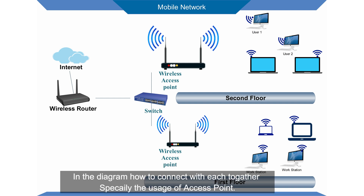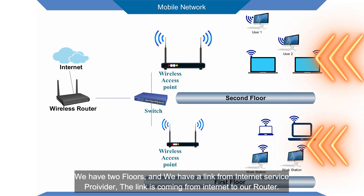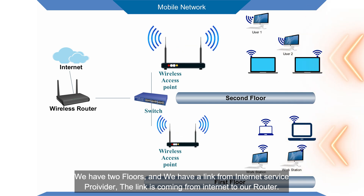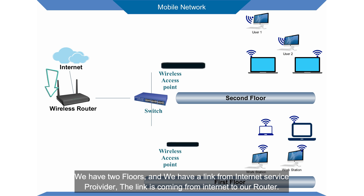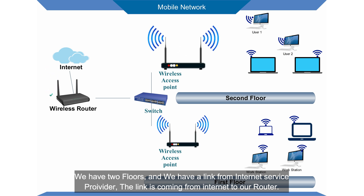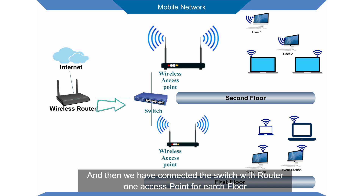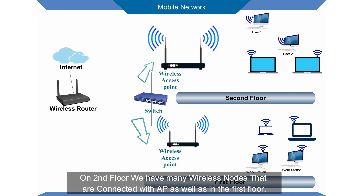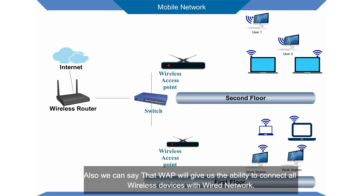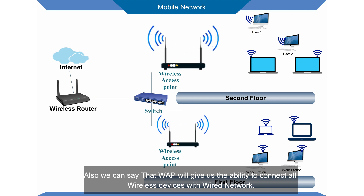Now I will show you in the diagram how to connect all devices together, especially the usage of a wireless access point. We have two floors and a link coming from the internet service provider. The link comes from the internet to our router, and then we have connected a switch with the router — one access point for each floor. On the second floor we have many wireless nodes connected with the access point, as well as on the first floor. A wireless access point gives us the ability to connect all wireless devices with a wired network.